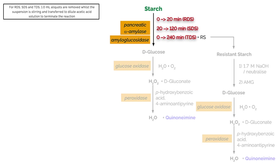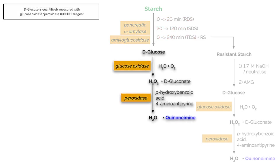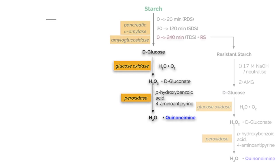For RDS, SDS, and TDS, 1 milliliter aliquots are removed whilst the suspension is stirring and transferred to dilute acetic acid solution to terminate the reaction. These solutions are mixed thoroughly, centrifuged, and 0.1 milliliter aliquots are incubated with 0.1 milliliter of amyloglucosidase to hydrolyze any remaining traces of maltose to glucose. D-glucose is quantitatively measured with glucose oxidase peroxidase (GOPOD) reagent, and the amount of D-glucose measured is stoichiometric with the amount of digestible starch in the sample.